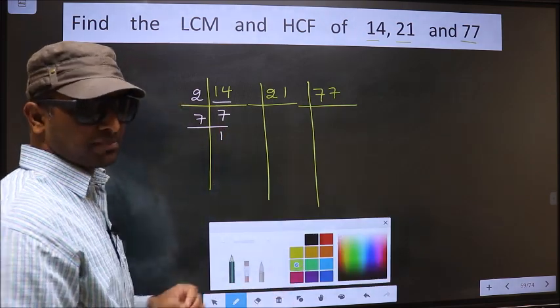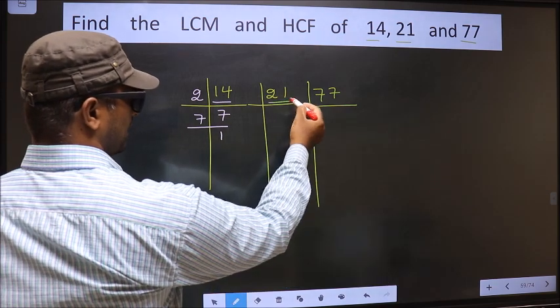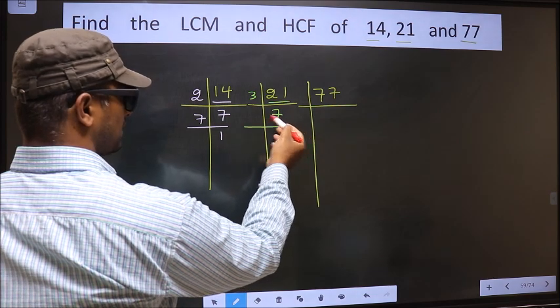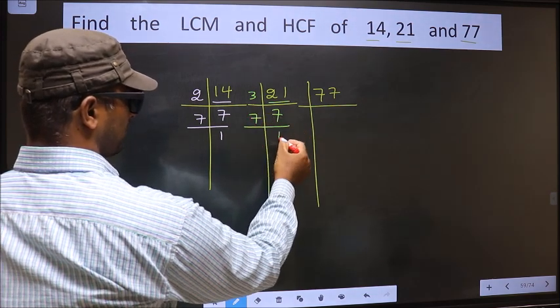Now the other number, 21. 21 is 3 times 7. Now we have 7. 7 is a prime number, so 7 times 1 is 7.